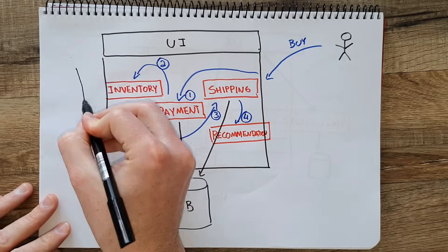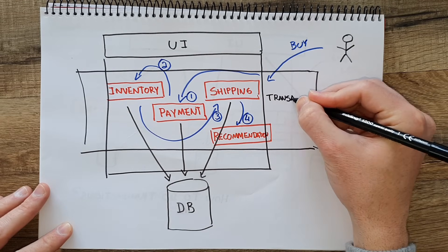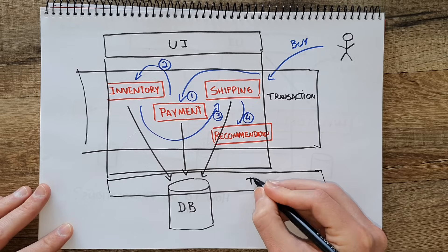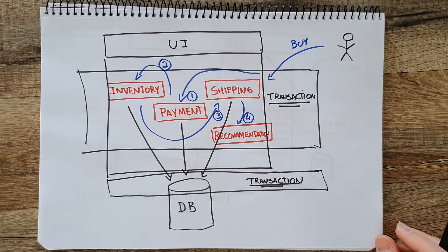When you have a monolith or a single application, you can coordinate between the different modules easily — they share the same database, you can put transactions in there, and you can also put transactions on the application level. But now that we are in a microservices architecture, it's harder to coordinate between all these services. So how do you do transactions in microservices?